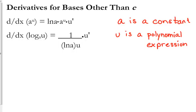The only thing that's different between a to the u and e to the u is the fact that your base is not e, so you have it multiplied by the natural log of the base.